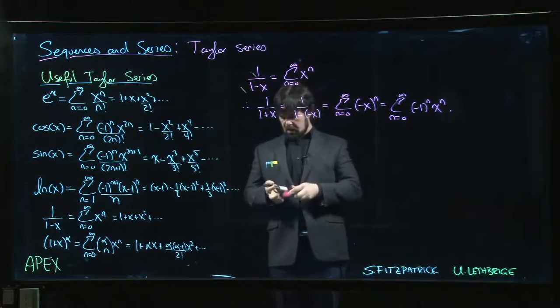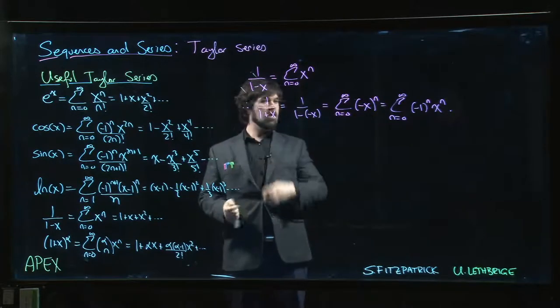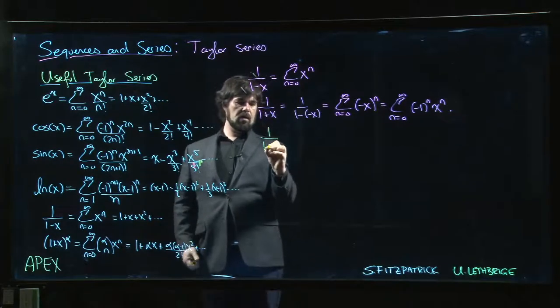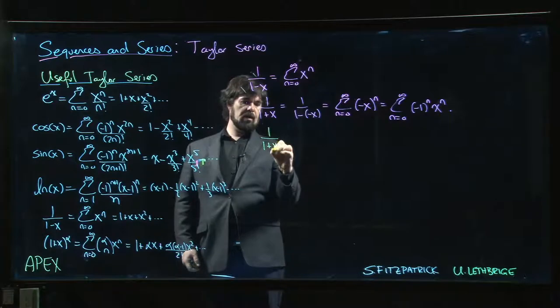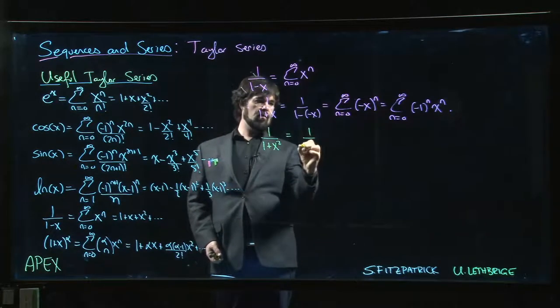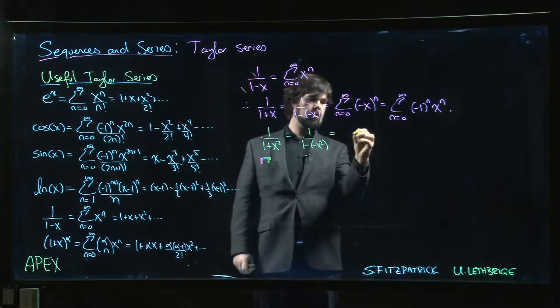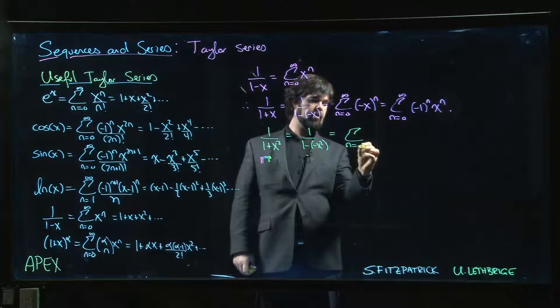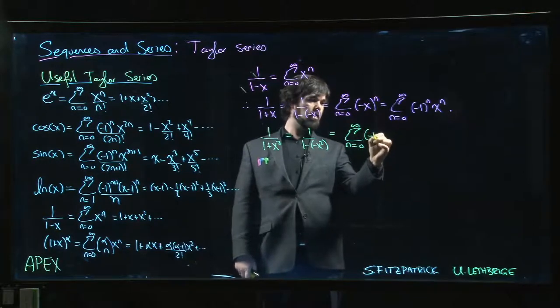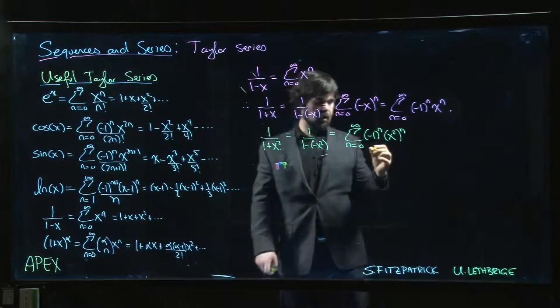We can keep going with this. We can say, well, if that's true then it should also be true that if I want to do, say, 1 over 1 plus x squared, that should be like 1 over 1 minus minus x squared. So that should be like the sum n going from 0 to infinity of, again, minus 1 to the n, and now it's x squared to the n.